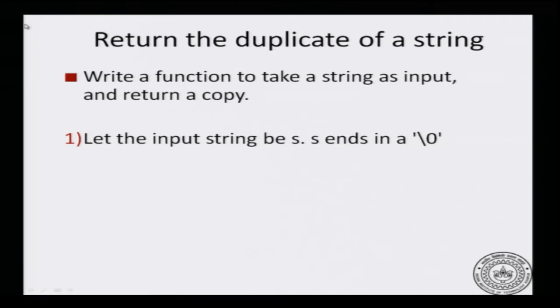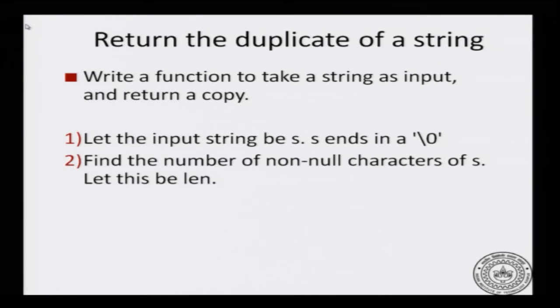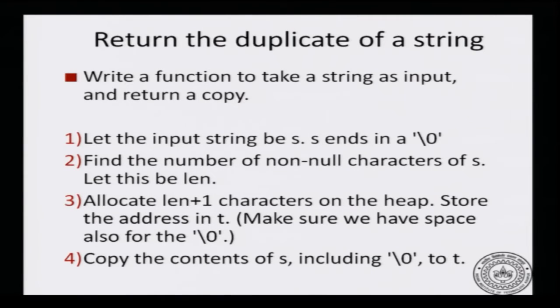Let us assume that the input string is s and it ends in a null character. We can find the number of non-null characters in the string — this will be referred to as the length of the string. What we will do is allocate length plus 1 characters on the heap using malloc, copy the contents of s to that space on the heap, and finally return the address of that location. Notice that the original array may be on the stack and the new duplicate array will be on the heap.